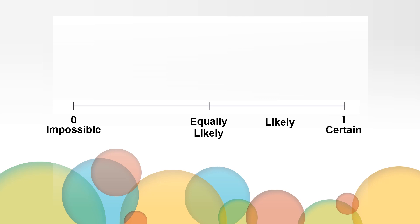When an event will probably not happen, but it's not completely impossible, we use the word unlikely. Unlikely events would be placed between impossible and equally likely.